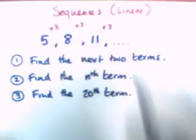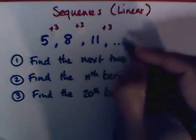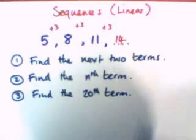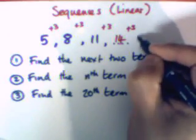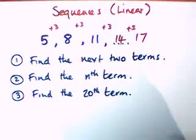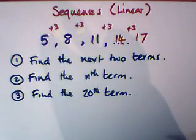So we would add another 3 on here, and hopefully if we added on 3 here, we would get 14, and if we added on another 3, we would get 17. This is what a linear sequence is. It goes up by the same amount each time. That's very important, the same amount each time.